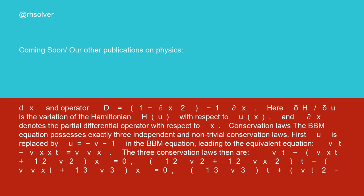Conservation laws: the BBM equation possesses exactly three independent and non-trivial conservation laws. First, u is replaced by u equals minus v minus 1 in the BBM equation, leading to the equivalent equation vt minus vxxt equals v vx.